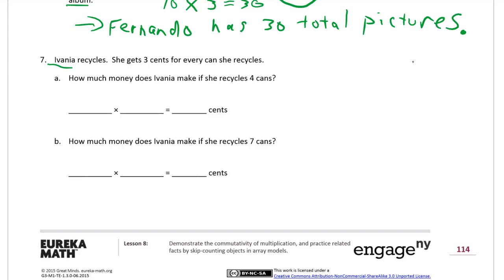Number seven. Ivania recycles. She gets three cents for every can she recycles. How much money does Ivania make if she recycles four cans? So she's going to recycle four cans, three cents for each can, which is going to be twelve cents. You can use repeated addition to count this up in your head if you need to. But you're going to see four times three and three times four equaling twelve a lot, so it's a good one to be able to remember. How much money does Ivania make if she recycles seven cans? So seven cans times three cents a can is going to be twenty-one cents.